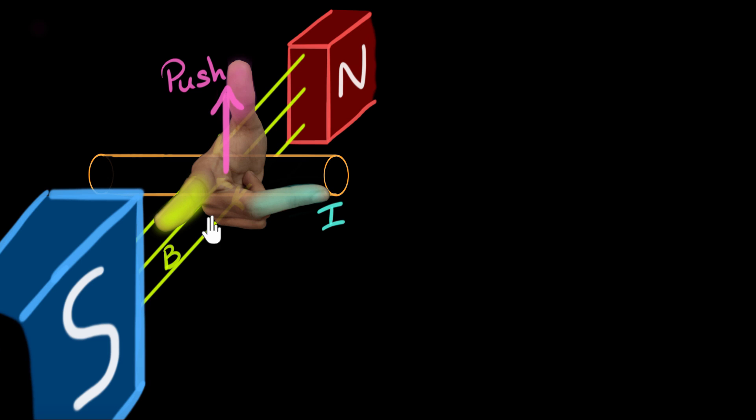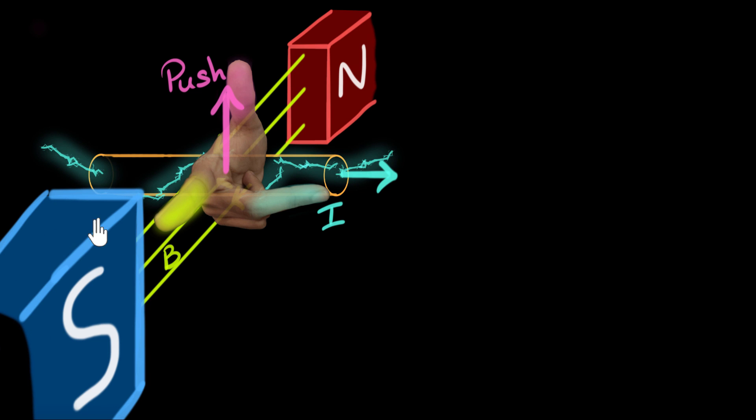That means the current in this conductor will flow to the right. So this is how we use our right hand generator rule to figure out the direction of the current when any conductor or any wire is moved in a magnetic field.